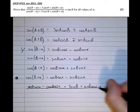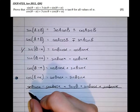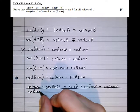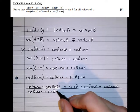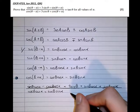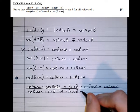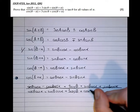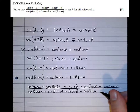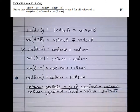In the denominator, we have cos theta cos alpha plus sine theta sine alpha, plus 3 cos theta, plus cos theta cos alpha minus sine theta sine alpha. Again, the sine theta sine alpha terms cancel.